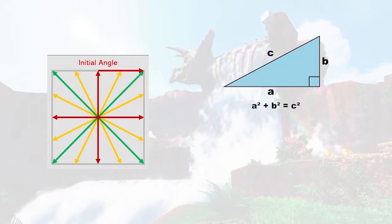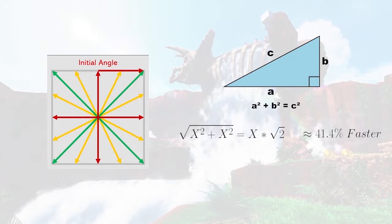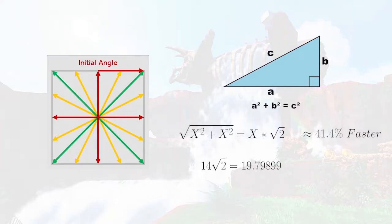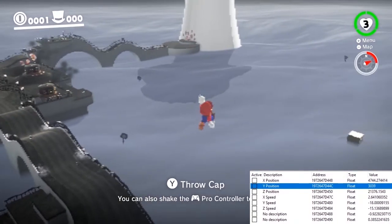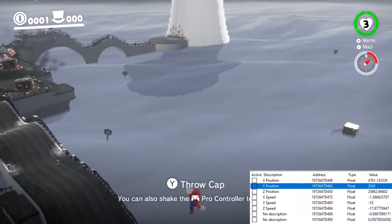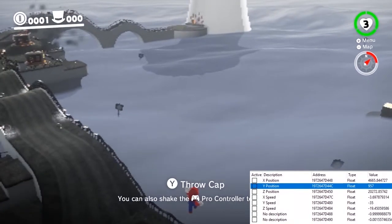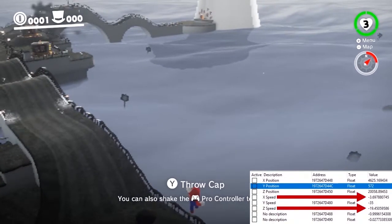Mario is getting the benefit of two perpendicular force vectors of equal magnitude, which results in a new top speed of square root of 2 times as much. Mario vectors a single jump and his vertical position is hacked so that he reaches his terminal velocity for horizontal and vertical speed. We can see the final horizontal speed is in fact 14 times the square root of 2.